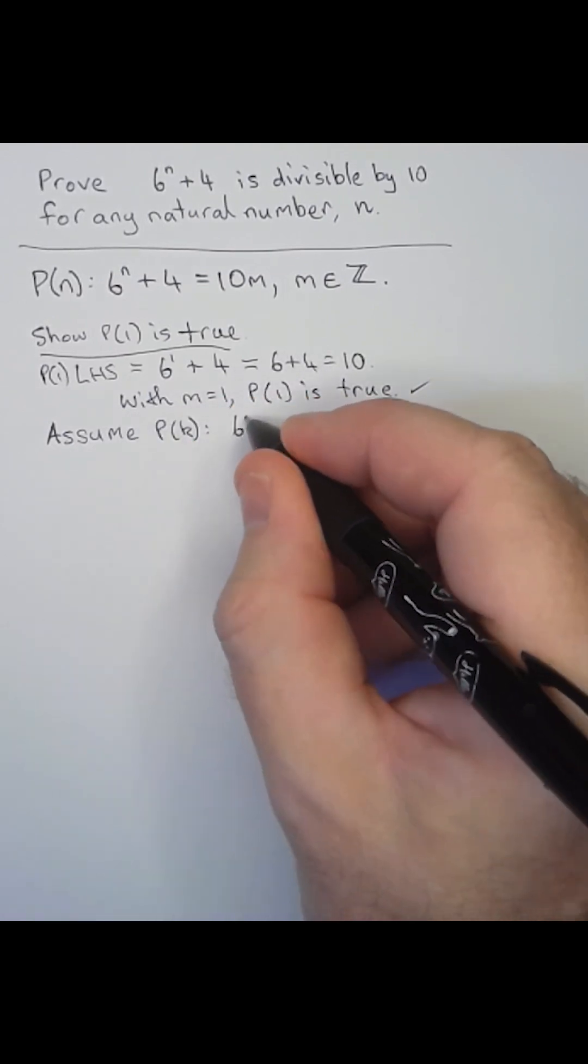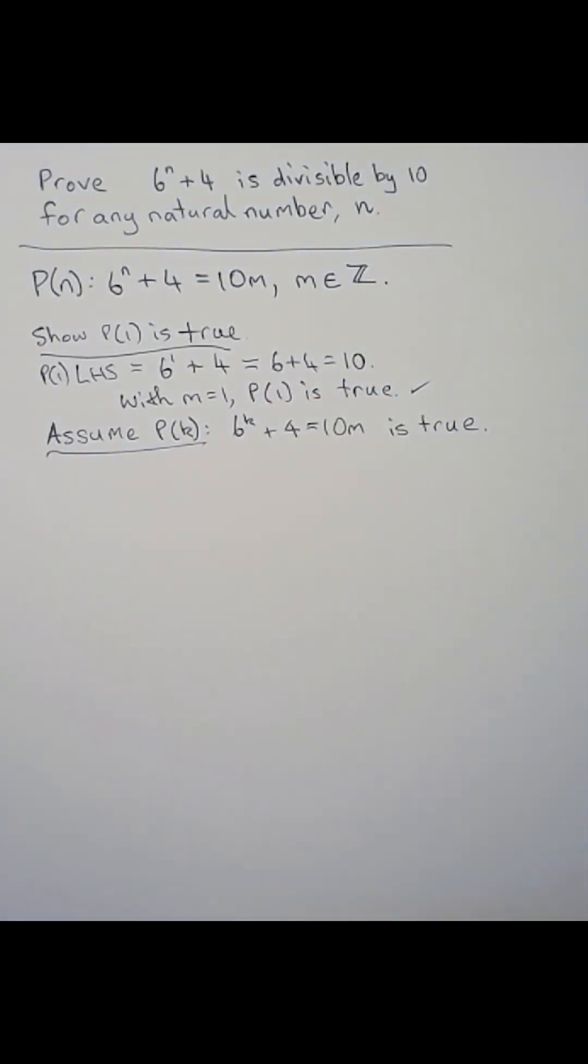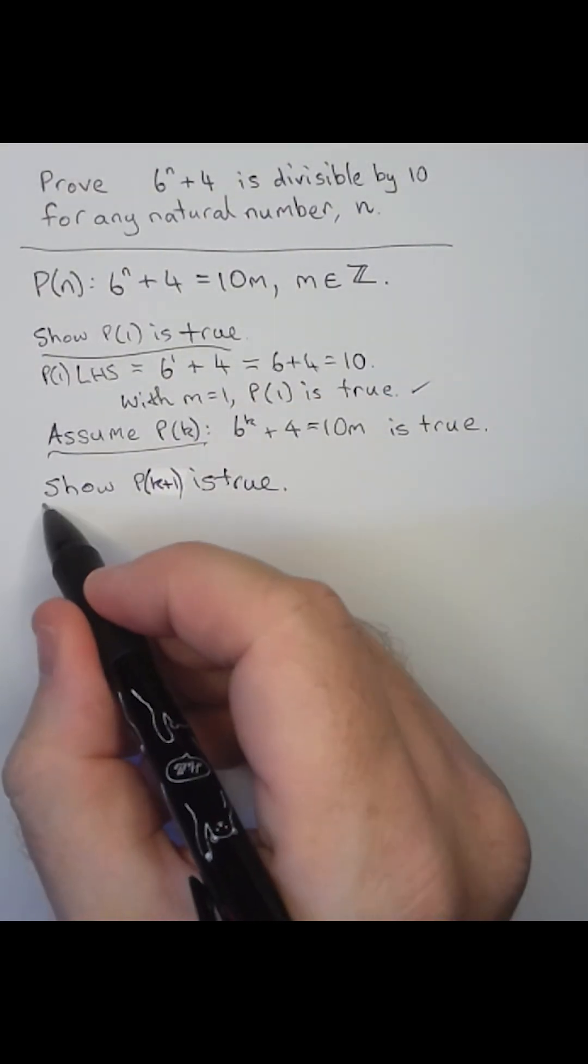Next, we'll assume that 6 to the k plus 4 is divisible by 10. And finally, we need to show that this is true for n equal to k plus 1.